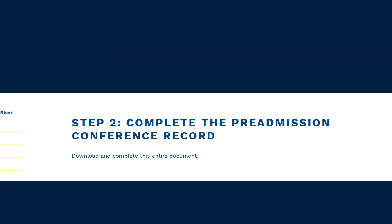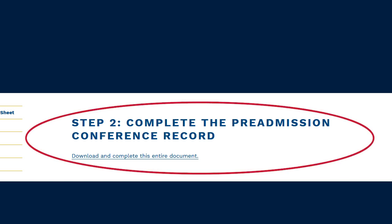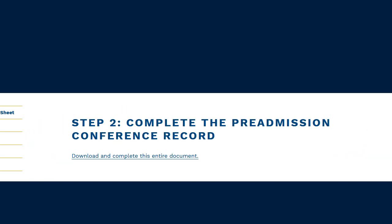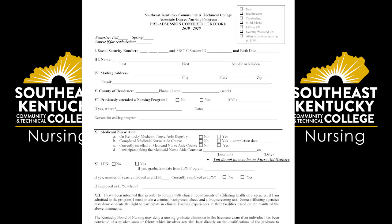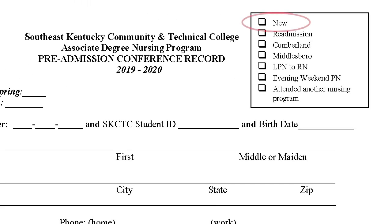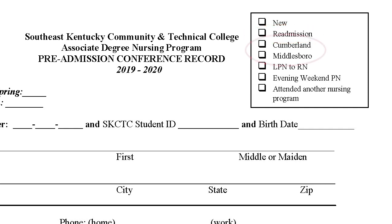Here we have pulled up the form for the pre-admission conference record, which is step two after you watch my introductory video. If you are a brand new nursing student applying to one of our programs and you've never been in a nursing program, or you're not a readmit, you're going to click 'New.' If you are a readmit, regardless of where you went, you will click 'Readmission.' Then you're going to select which campus you're applying for — we have an RN program on the Cumberland campus and an RN program on the Middlesbrough campus.